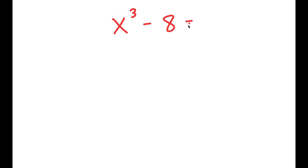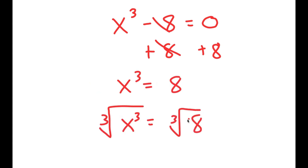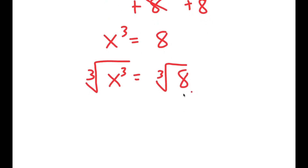In this video, I'm going to solve the equation x to the power of 3 minus 8 is equal to 0. How most people solve this is they add 8 on both sides to get x to the power of 3 equals 8, then take the cube root on both sides. The cube root of x cubed is x, and the cube root of 8 is 2, so they get x equals 2, which is a solution.